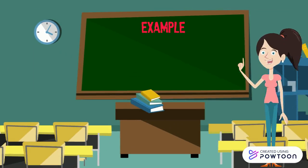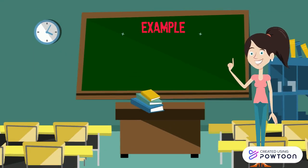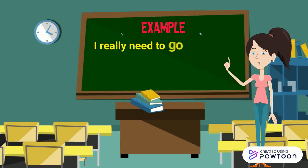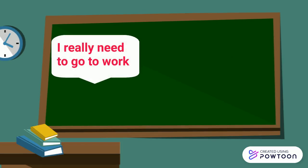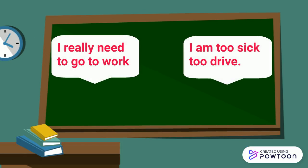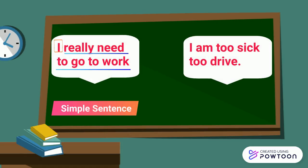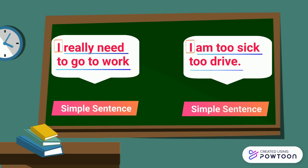Let's take a look at a compound sentence: "I really need to go to work, but I am too sick to drive." Let's break it down. Subject and predicate — that's one simple sentence. Plus subject and predicate — that's another simple sentence. Joined by a comma and a conjunction, but, they form a compound sentence.